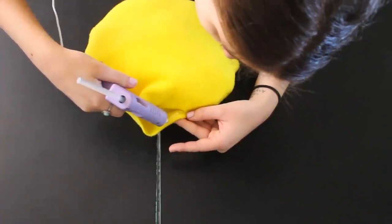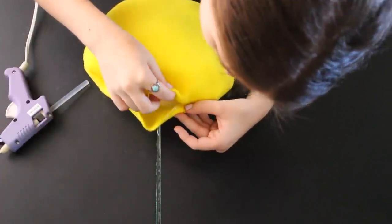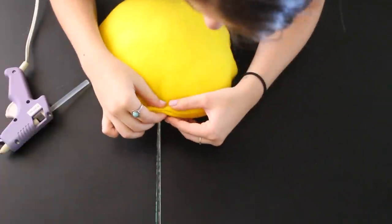I suppose if you want to actually use it to sort of sleep on you might want it to be a little bit fluffier, but mine's just for show. And then all you have to do is use your hot glue gun and close up the little opening that we had there to put the polyfill in, and then we are ready to start creating the face.